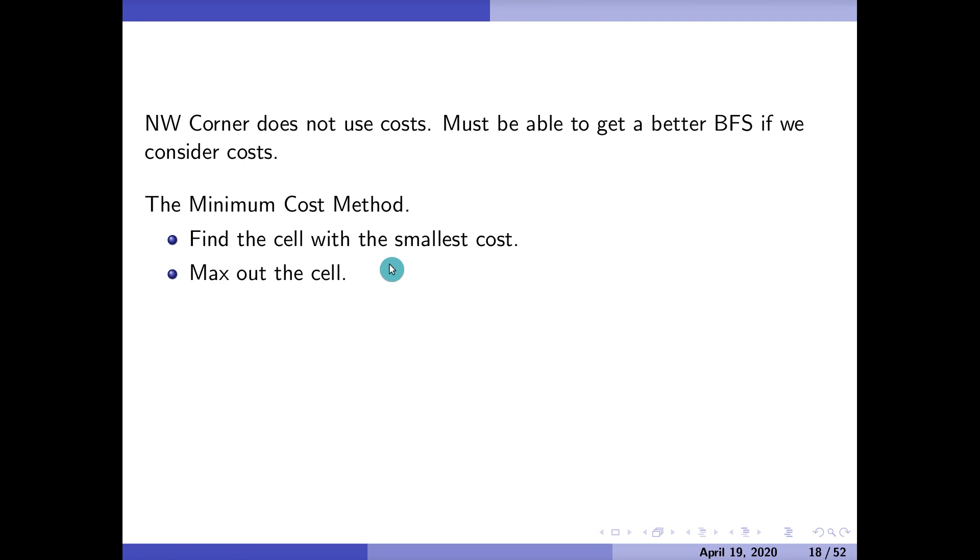Now, northwest corner method is kind of a fun, little simple method, but it doesn't even take into account the costs that we're trying to minimize. So I wonder if we can get a better method. The minimum cost method tries to be a little bit better than that. And the way this will work is you can probably guess when you take your array, you want to pick the cell with a minimum cost. Max that cell out. That's going to deplete either the row or the column. And so scratch that row or column. And then if you have a tie, you can just choose a row or column just at random. And then you repeat.